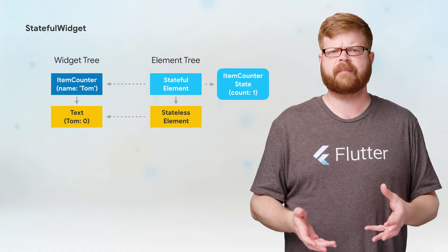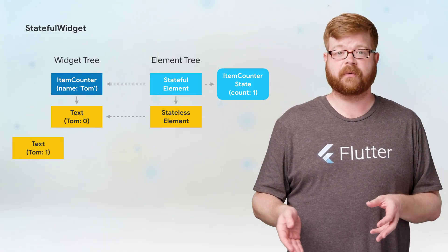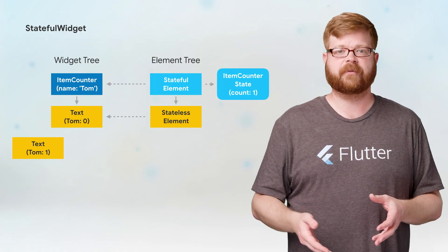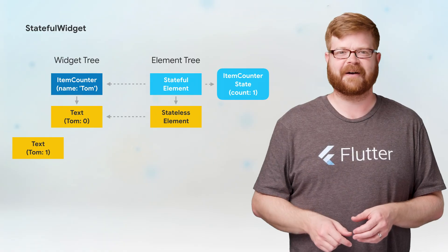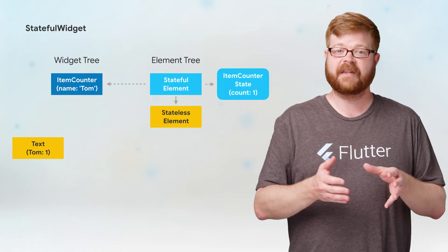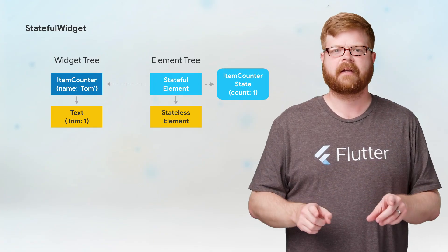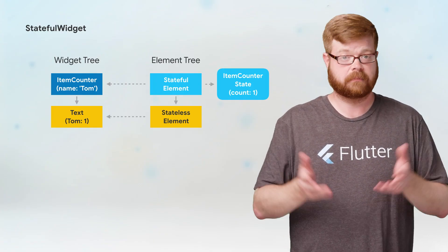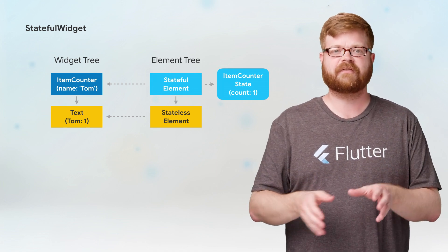And here I'm using frame in the graphics card, 60-frames-per-second sense. When that next frame rolls around, just like before, the stateful element calls the build method in the state object to rebuild the children, and out pops a new text widget that shows the new count. The old text widget goes away, and in comes the new one. Because that new widget is the same type as the old one — they're both text — the stateless element stays right where it is and just updates itself to reference the new widget.